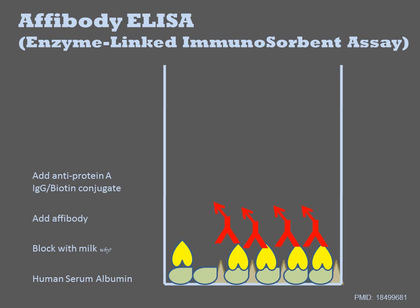We then add an anti-protein A IgG biotin conjugate. Alpha-bodies derived from protein A, such as ours, will react with this IgG antibody. The reagent will become immobilized on the surface of the plate. The biotin is chemically reacted with the antibody by the company that supplies it, so biotin is now also immobilized on the plate.